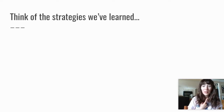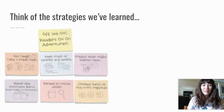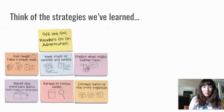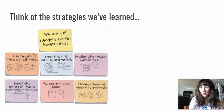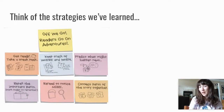I can think of the sneak peek and making predictions. What else have we done? We've done the sneak peek. We've kept track of where the story is happening and when it's happening. We have predicted what might happen next. We've practiced retelling the important parts. We reread to notice more and we've connected parts of the story by looking at patterns that we notice.